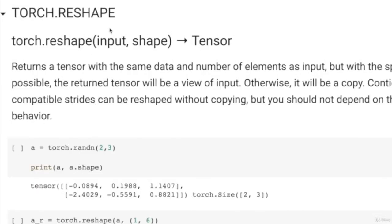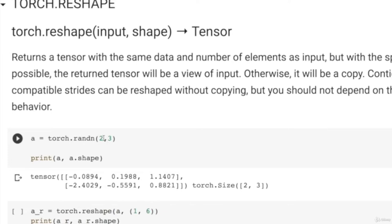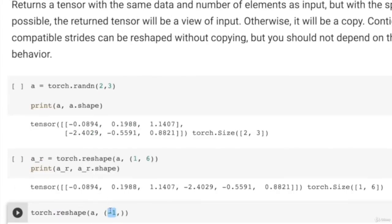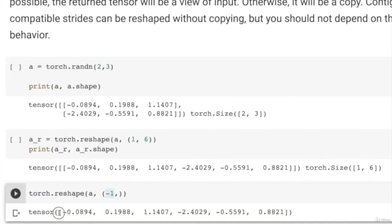Let us look at Torch.reshape. The behavior of reshape is not always easily interpretable — it does not always copy the tensor to a new shape. When possible, it returns the tensor with a new shape, but you should not depend on whether it is doing a copy or giving a view. There is a separate function Torch.view which always returns a view of a tensor, not a copy. If you reshape a 2×3 tensor to shape (1,6), it flattens into a 1×6 tensor. Using reshape with -1 as argument flattens to a 1D tensor.